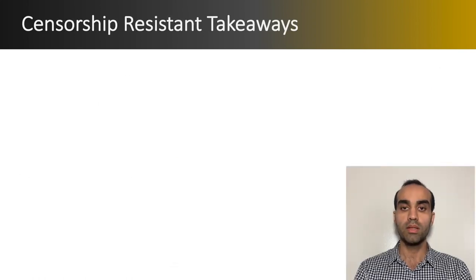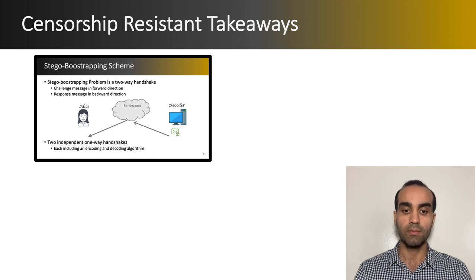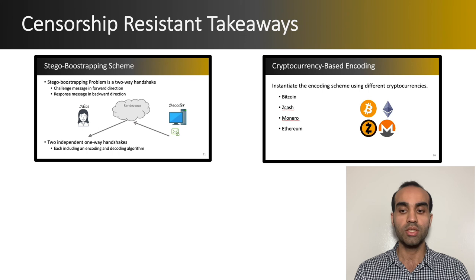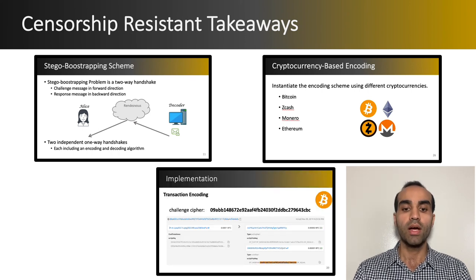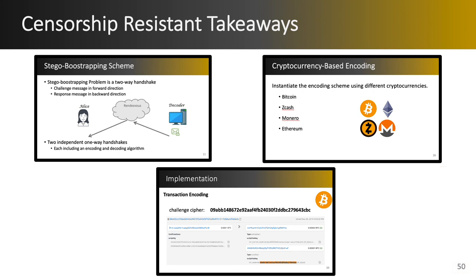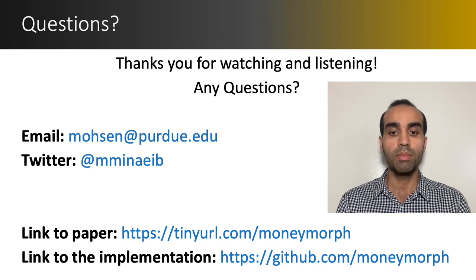To conclude: first, we defined the stego bootstrapping scheme with security and privacy properties — specifically rareness and security against the chosen cover text attack. Next, we introduced MoneyMorph, our instantiation for Bitcoin, Ethereum, Zcash, and Monero, and compared them based on percentage of sibling transactions, their costs, and the bandwidth they provide. Finally, we showed the feasibility of MoneyMorph by implementing it in the test networks of the mentioned cryptocurrencies. Thank you for watching. You can contact us through email and Twitter, and the link to the paper and our MoneyMorph implementation is provided below. We are happy to answer any questions.